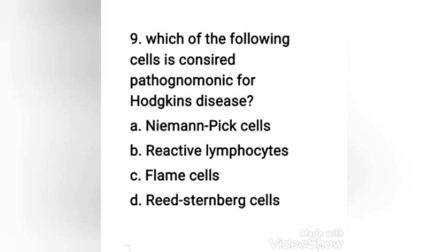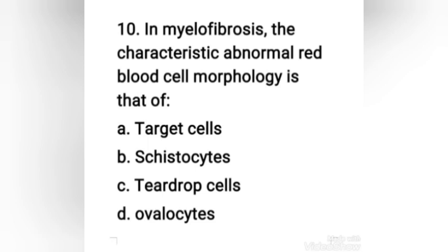Next question: which of the following cells is considered pathognomonic for Hodgkin's disease — Niemann-Pick cells, reactive lymphocytes, flame cells, or Reed-Sternberg cells? The right answer is option D, Reed-Sternberg cells. The morphological hallmark of Hodgkin's lymphoma is the Reed-Sternberg cell — a large binucleated cell with a dense nucleus surrounded by clear space. Niemann-Pick cells are histiocytes containing phagocytized sphingolipids that stain pale blue. Flame cells are plasma cells with distinct red cytoplasm, sometimes seen in multiple myeloma.